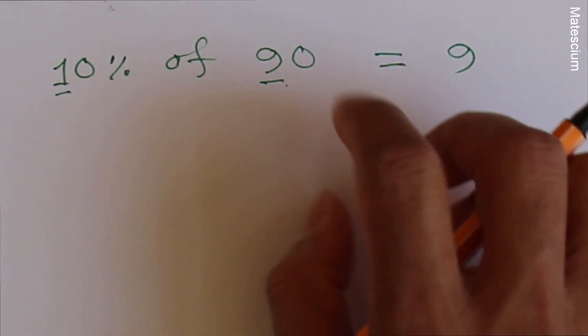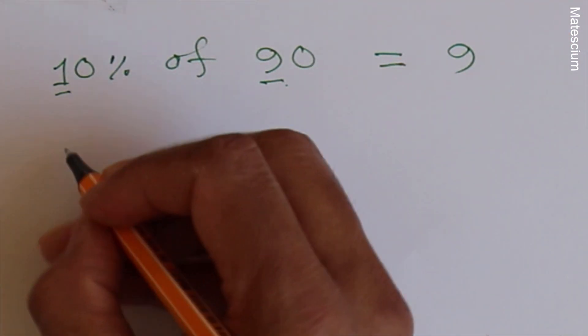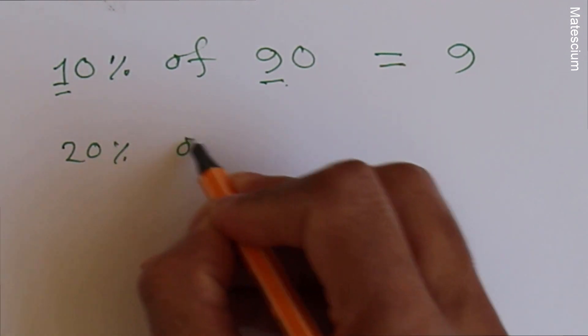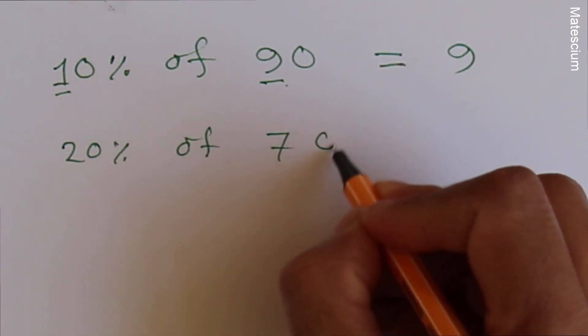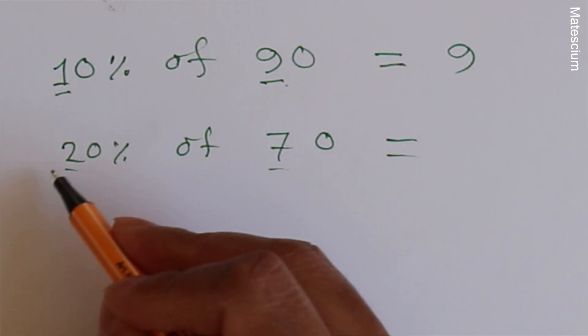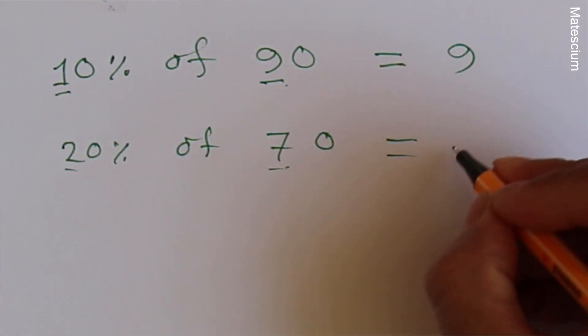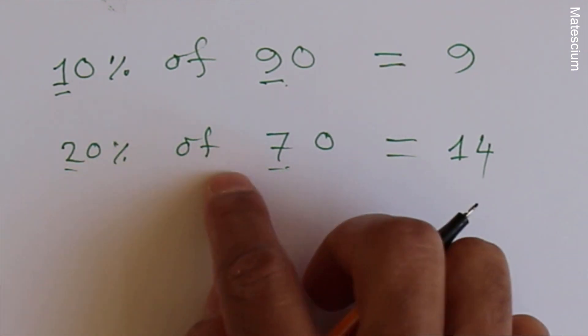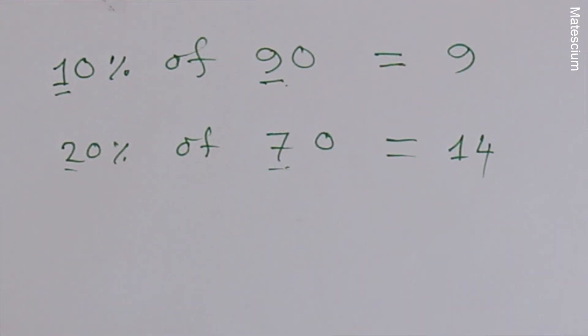Another example, 20% of 70. Same way, multiply two with seven. Seven times two is 14. Yes, the answer is 14, so 20% of 70 is 14. Isn't it simple? Let's practice some more.